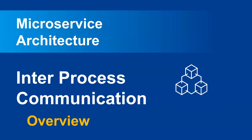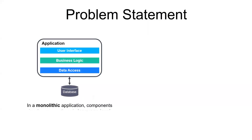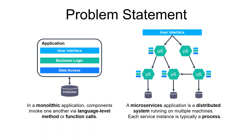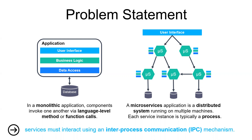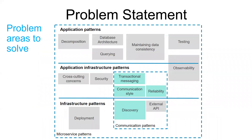Hey guys, welcome back to this new video. In this part of the series I will talk about how services communicate between them, or what we technically call inter-process communication. This first introductory video will be an overview. In a monolithic application, the different components invoke one another via language-level methods or function calls — everything is done inside the monolith on the same machine. In contrast, a microservices application is a distributed system running on multiple machines, and each service instance is typically seen as a separate process. This is why services must interact using an inter-process communication mechanism, or IPC.